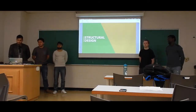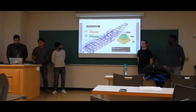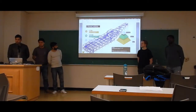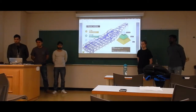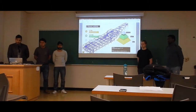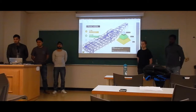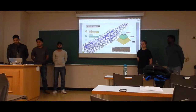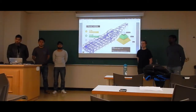We started with the structural design using the S-frame model once we received the architectural package. We looked at the architectural package, figured out where the columns were, and started putting them in as nodes in a 3D plane using X, Y, and Z coordinate axes. Once the columns were in place, we connected them as members, making them columns. Once the columns were in shape, we could see where our floors were and added floors and roofs as diaphragms, connected as rigid.